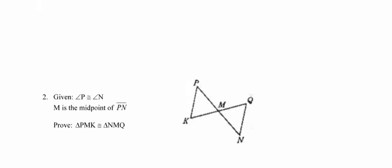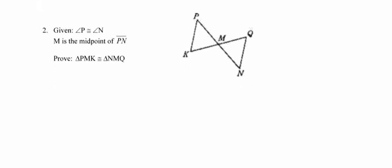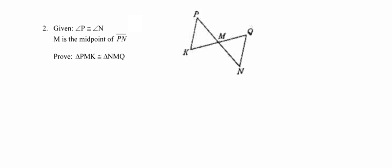Moving along, let's look at the next problem. There appears to be a typo: the second given should say M is the midpoint of segment KQ, not PN. Go ahead and correct that on your paper. Segment KQ is that blue segment, and the midpoint makes two congruent segments — I'll mark those. Once I finish marking given information, I look for vertical angles — this picture does have a pair — and for shared sides, of which there aren't any here.